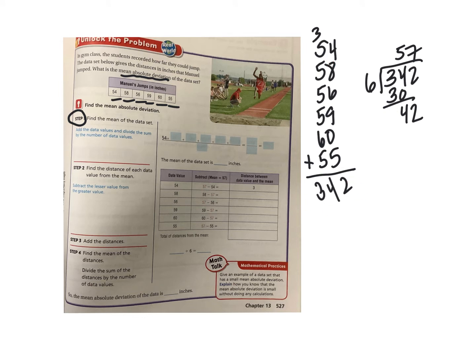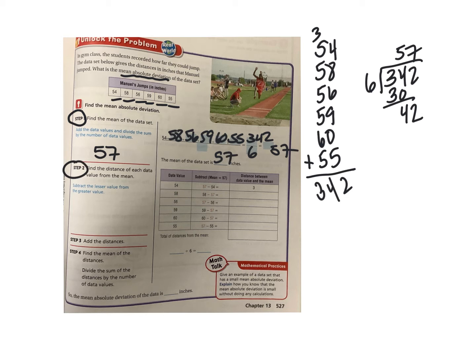All added together that was 342, divided by 6. 6 goes into 34 five times, bring down the 2, 6 goes into 42 seven times. So the mean of the whole data set is 57. 342 divided by 6 is 57.